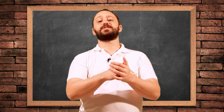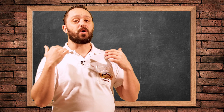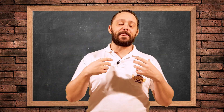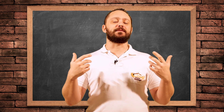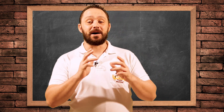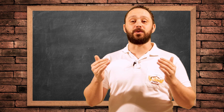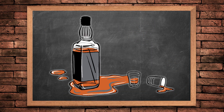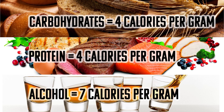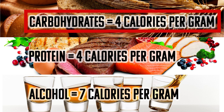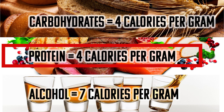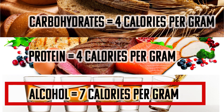The first thing to note is that when we talk about calories in beer, we are working with certain constants. The fat amounts in beer are negligible, but there are constants for the other components — namely carbohydrates, alcohol, and protein. The constants are: carbohydrates at 4 calories per gram, protein at 4 calories per gram, and alcohol at 7 calories per gram.